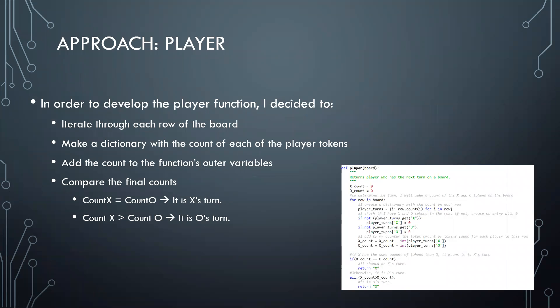Regarding my player function, it is quite simple. I just have to iterate through each row of the board. Once I'm in the rows, I make a dictionary with the count of each of the player's tokens, and then I add that count to my outer variables so I can finally compare the counts.